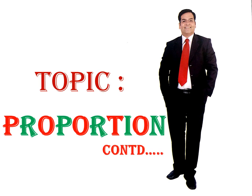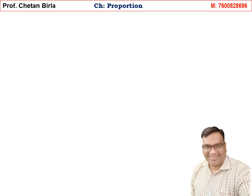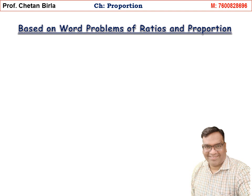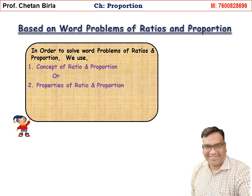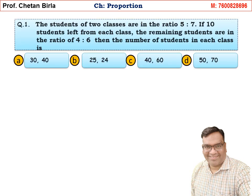Hello friends, greeting of the day. The topic is Proportion and let us continue this topic, based on word problems of ratios and proportions. In order to solve word problems of ratios and proportions we use: Number 1 - Concept of Ratio and Proportion or Properties, Number 2 - Option Method. In CA Foundation we generally use the Option Method to save time.